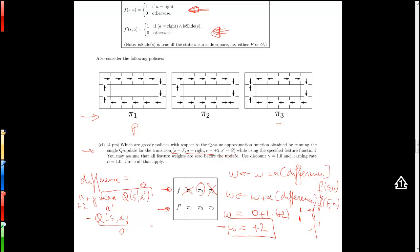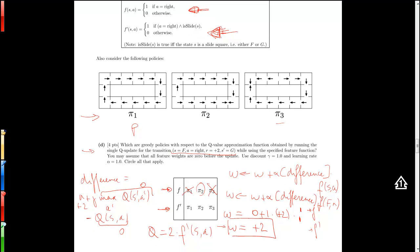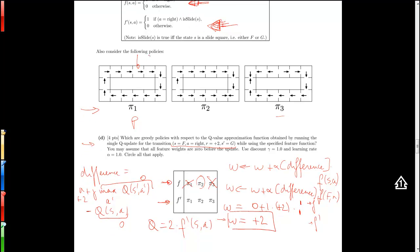Now for F prime, so now our Q equals 2 times F prime(S,A). So let's switch back to this. Whenever the slide is there, we should pick the right action. So where is the slide? The slide is in F and G, which is here and here, here and here, here and here. With policy pi 1, when the slide is available we indeed move right.